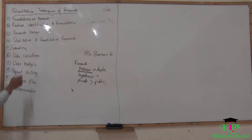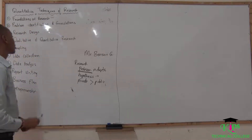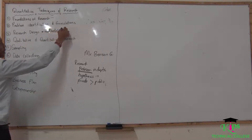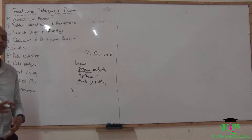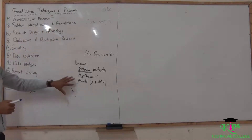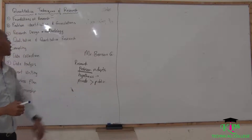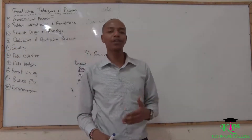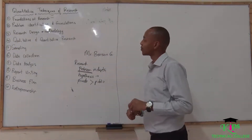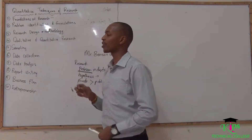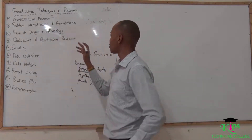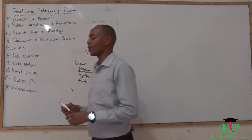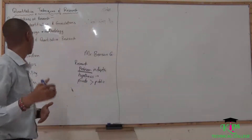Then there is something called the research design, which is also referred to as the research methodology. In this case you want to talk about the methods that you want to use to address the problem at hand. You may say that you will use different tools and methods to collect data — for example, you may decide on the method you will use to collect data, such as questionnaires or samples.